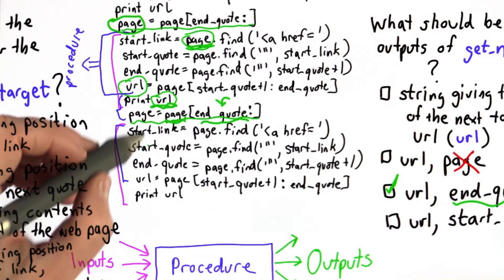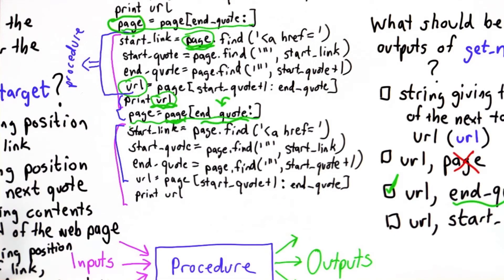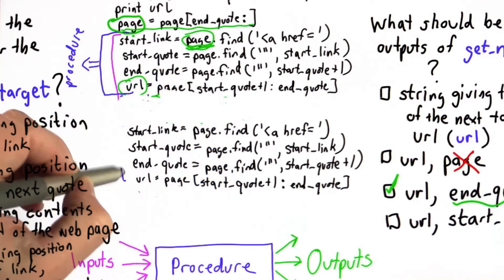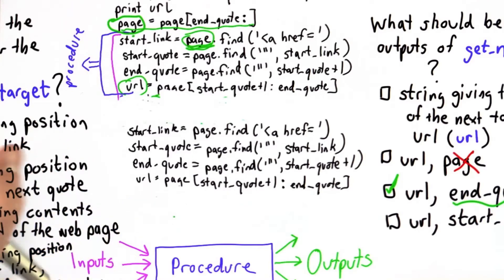So I'm going to write the procedure by modifying the code here. So first what we're going to do is make a little space, erasing the code that's not part of the four lines that we want to turn into the procedure.